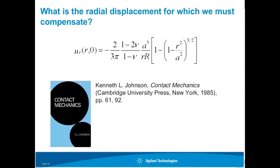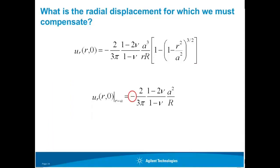What exactly is the radial displacement for which we have to compensate? I found the very expression I needed for Hertzian radial displacement in Ken Johnson's classic text on contact mechanics. This is the expression for the surface radial displacement of a Hertzian contact. What we really want is the value of this expression at the edge of contact where R equals A. When R equals A, the bracketed term reduces to one, and we are left with a simplified expression for radial displacement at the edge of contact. The negative sign indicates that the displacement is radially inward.